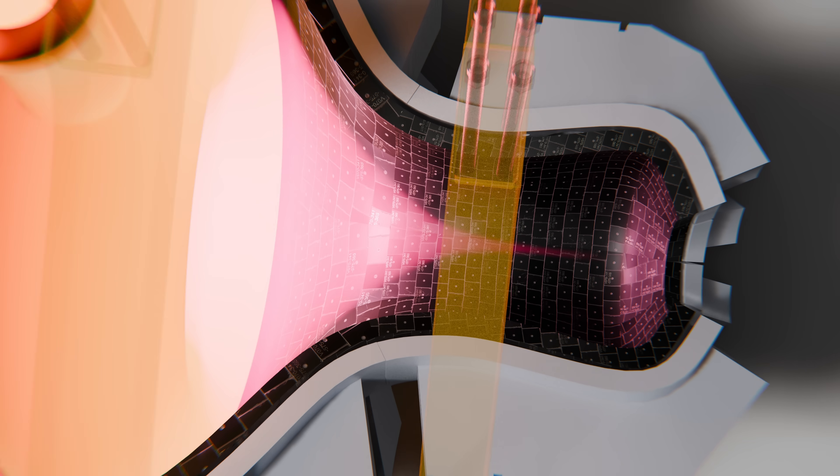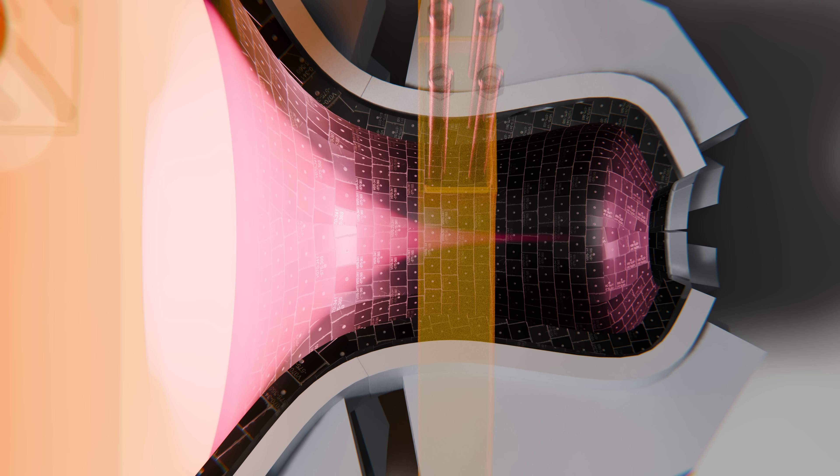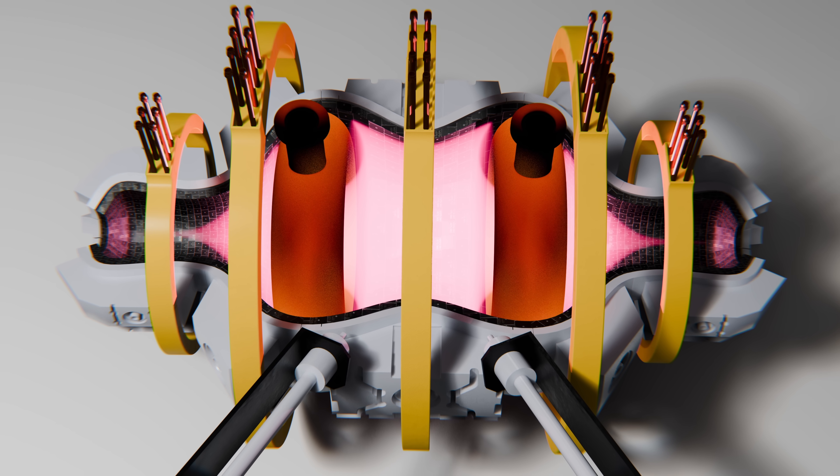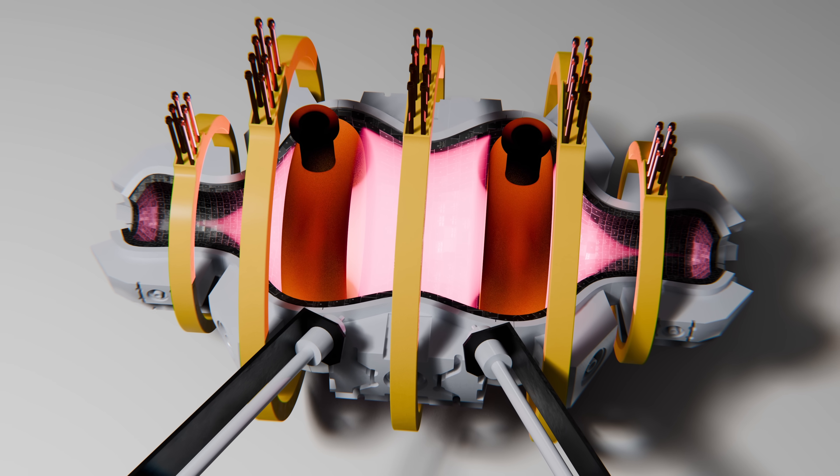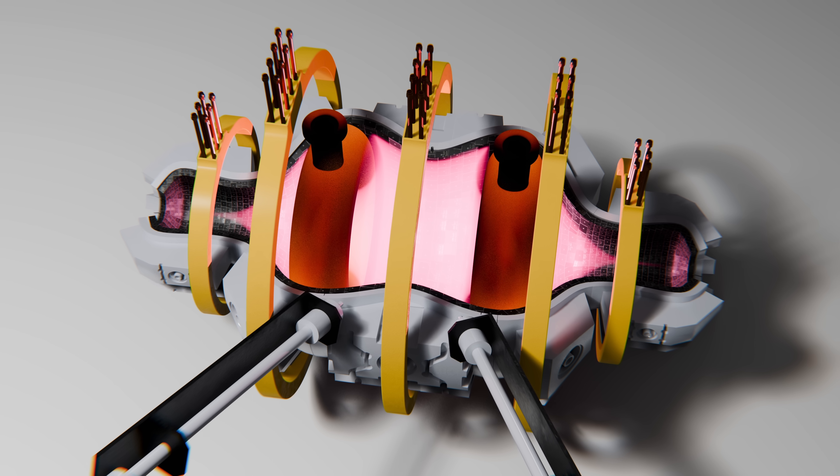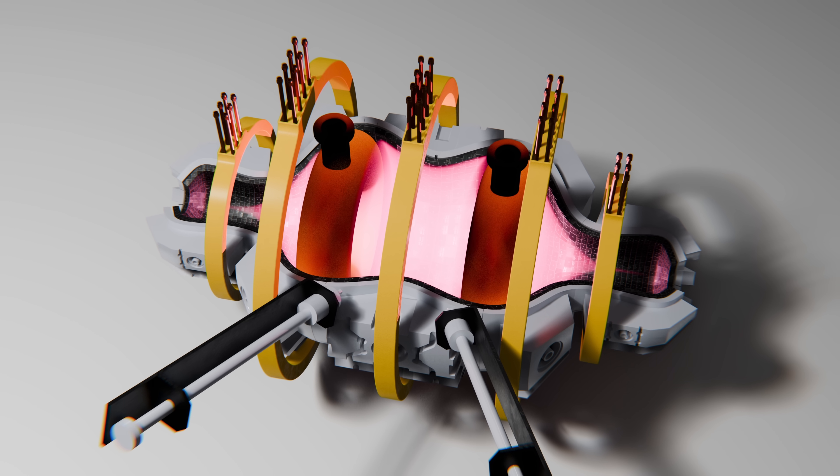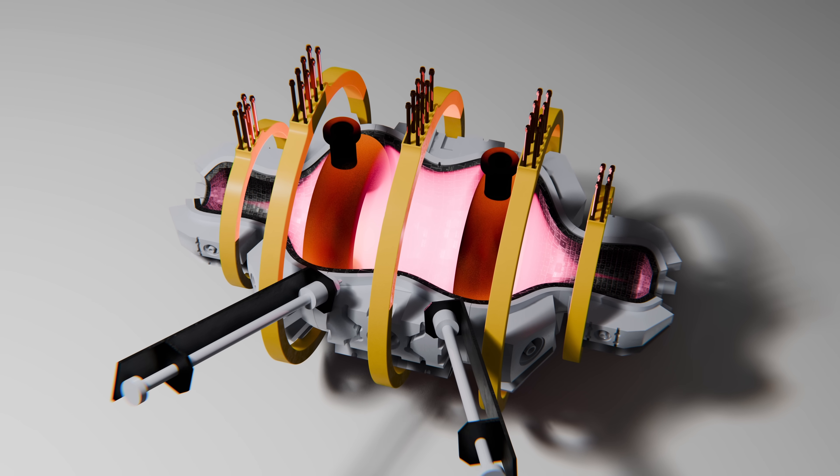When fusion happens, energetic neutrons are released. These would pass through a magnetic field and hit a surrounding lithium blanket, generating heat. That heat would then drive a traditional steam turbine to produce electricity, the same basic principle as in conventional power plants, but powered by fusion energy. Lockheed claimed this design could scale down fusion reactors to the size of a semi-truck trailer, around 20 tons, instead of the thousands of tons required for conventional designs.